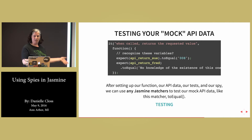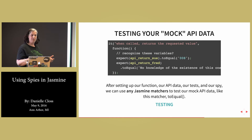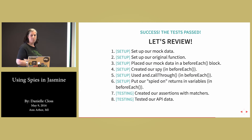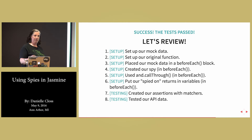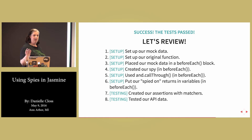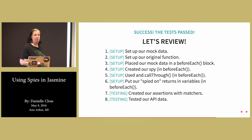So now that we've created the mock data, created our function to spy on, and spied on it with the Jasmine spy, we can finally test our mock API function. We can treat this function as we would treat any other function in our test suite and create assertions for it. Here's a review: we set up our mock data, set up our original function, placed our mock data into a beforeEach block so it would be accessible to all the tests, created our spy, used andCallThrough to go through the actual implementation, put our spy returns into variables, created assertions with matchers, and tested our API data.